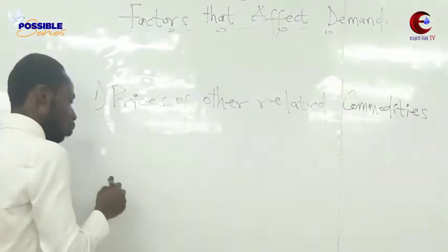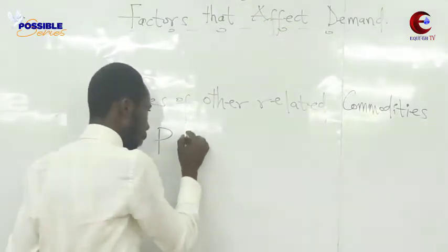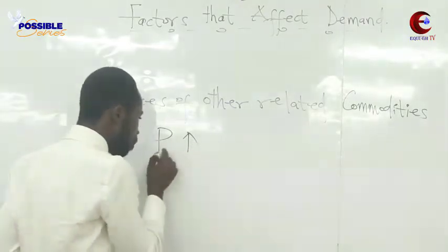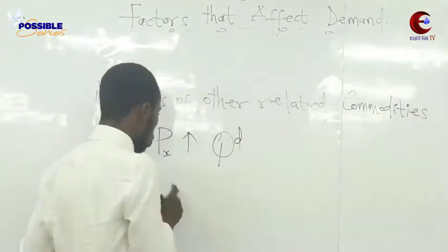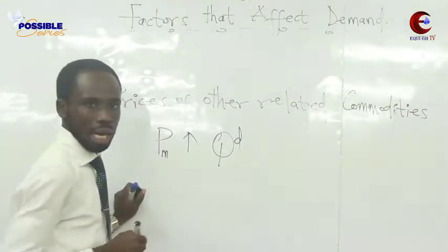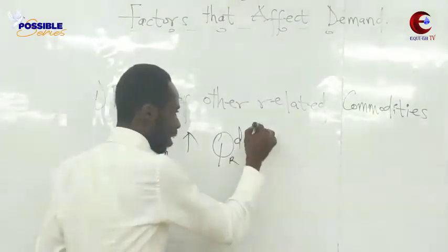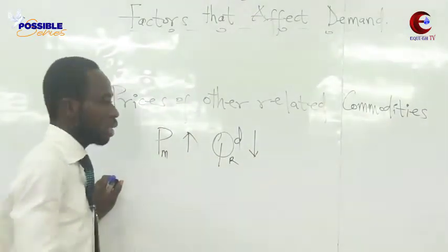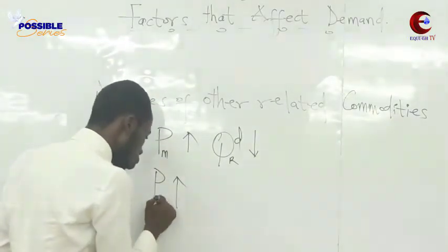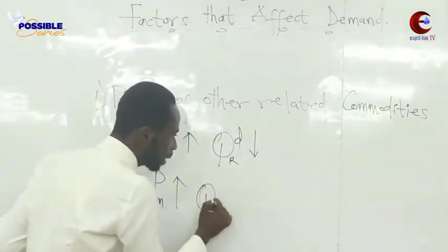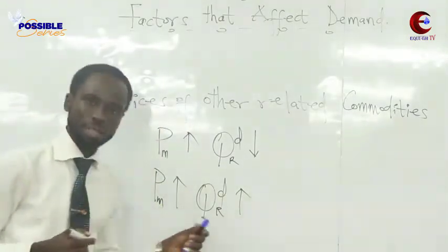Now, if the price of Milo goes up and the quantity demanded of our commodity Richoku comes down, that means something. Also, if the price of Milo goes up and the quantity demanded of Richoku also goes up, that one also means something.